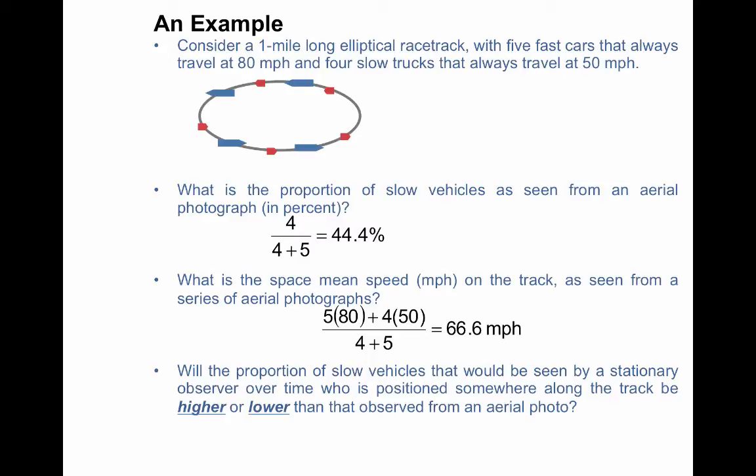So shifting from a spatial measure to a point-based measure, I want to ask the question, will the proportion of slow vehicles seen by a stationary observer over time who is positioned somewhere along the track be higher or lower than that observed from an aerial photo? So in order to think about that, visualize yourself standing by the side of this track, recording the arrival times of each vehicle. Say you're doing this for 15, 20 minutes, or maybe even an hour.